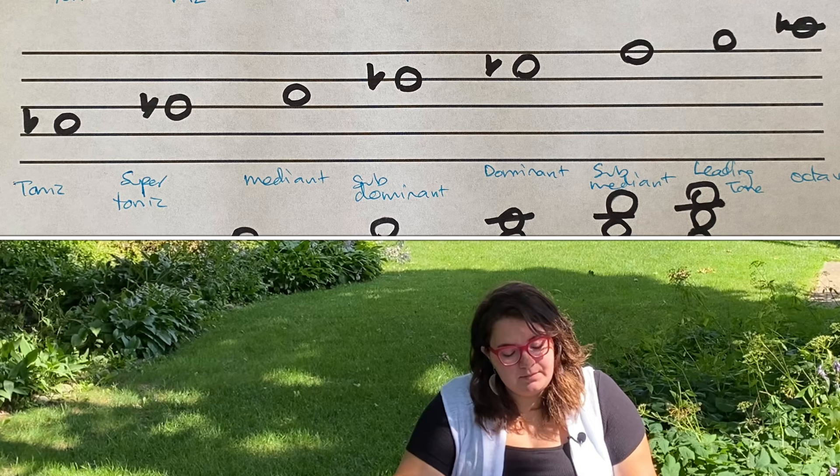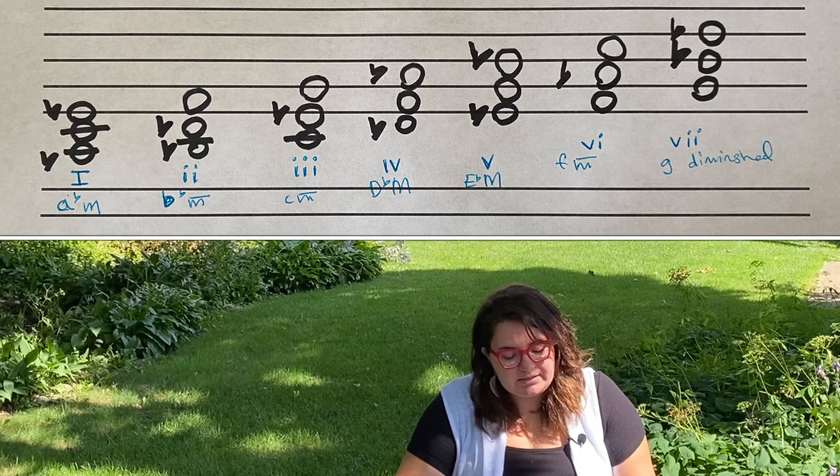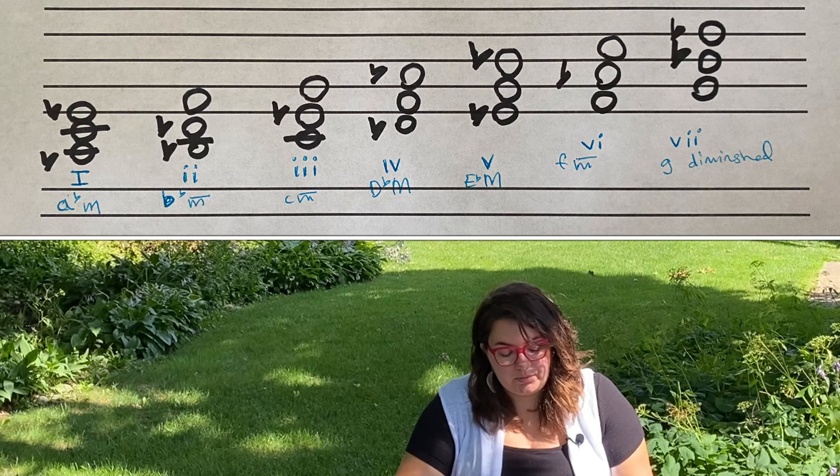Our triad chords: the first chord is A-flat major — A-flat, C, E-flat. Second chord is B-flat minor — B-flat, D-flat, F. Third chord is C minor — C, E-flat, G. Fourth chord is D-flat major — D-flat, F, A-flat. Fifth chord is E-flat major — E-flat, G, B-flat.